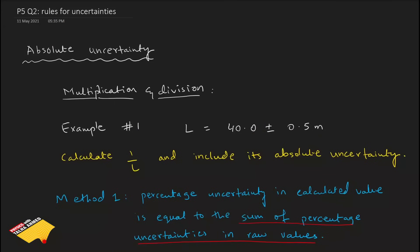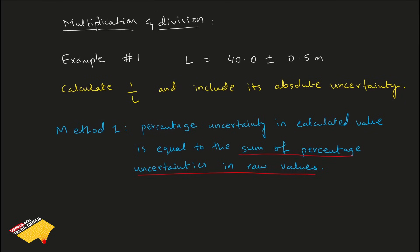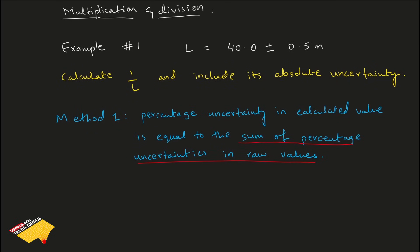Let's jump into the screen. We will start with examples involving multiplication and division, where you are given an absolute uncertainty and also have to calculate an uncertainty in your answer. In this first example, you are given a value of L which is 40.0, with an uncertainty of plus or minus 0.5 meters. You have to find 1 over L and calculate the uncertainty in 1 over L. The value of 1 over 40.0 gives us 0.0250 per meter.